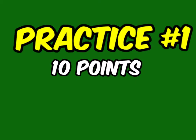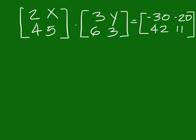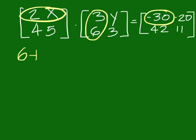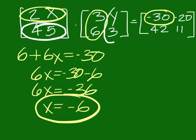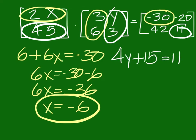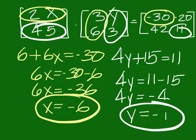Try this one. For the X value, we can go here, here, and set it equal to this. To come up with 6 plus 6X equals negative 30. So that's 6X equals negative 30 minus 6 which is negative 36. So X would be negative 6. For the Y, we can do this and this. Set it equal to 11 to get 4Y plus 15 equals 11. So 11 minus 15 is going to give me a negative 4. So you should add negative 1, negative 1, negative 6.